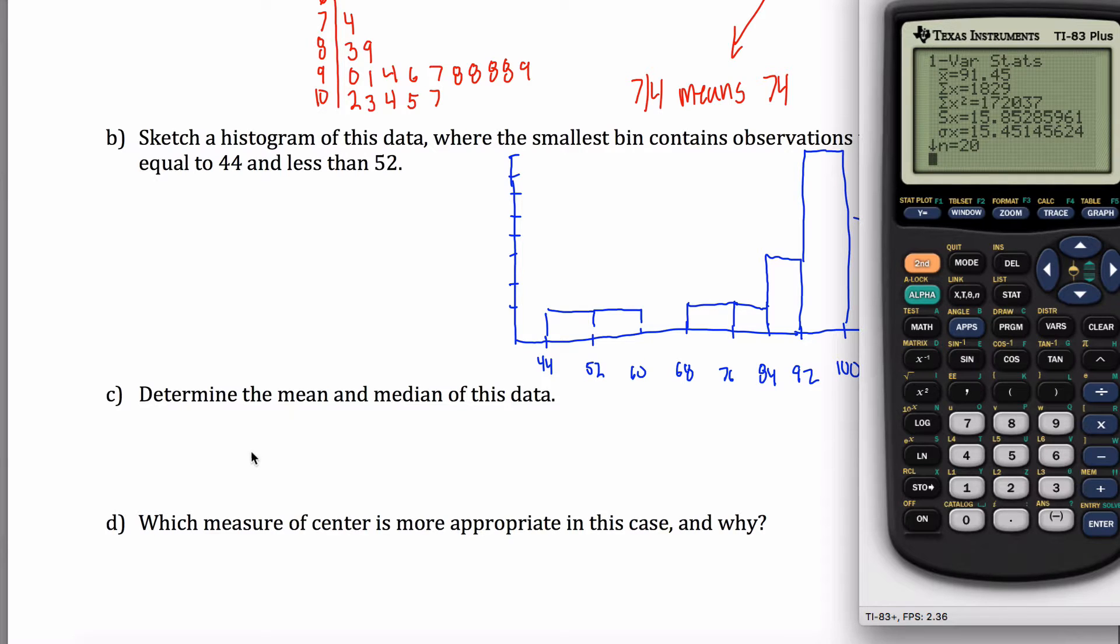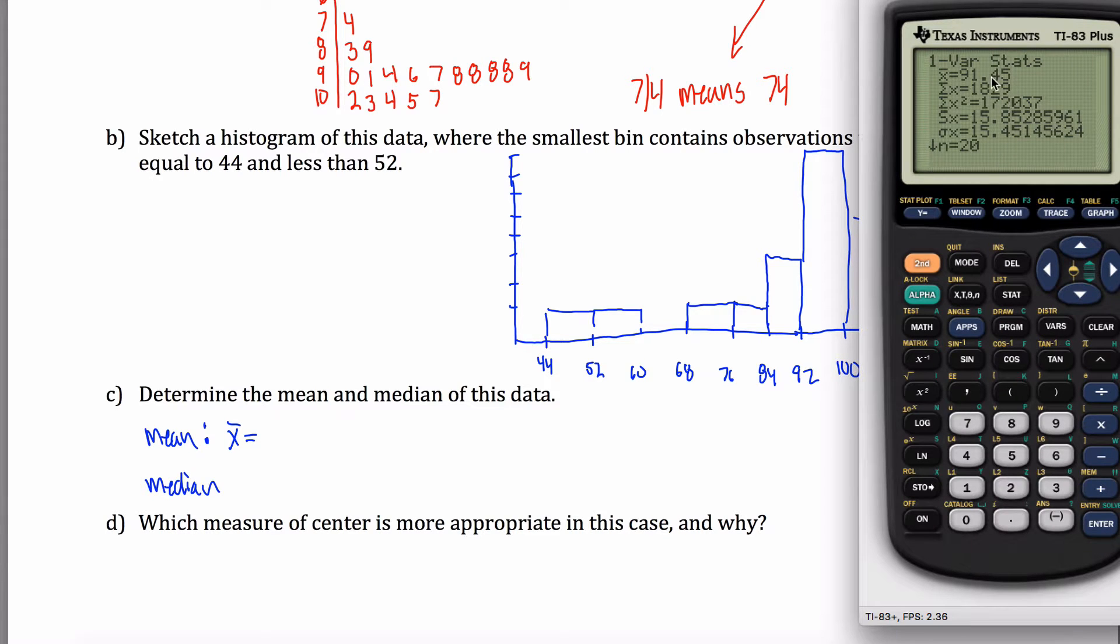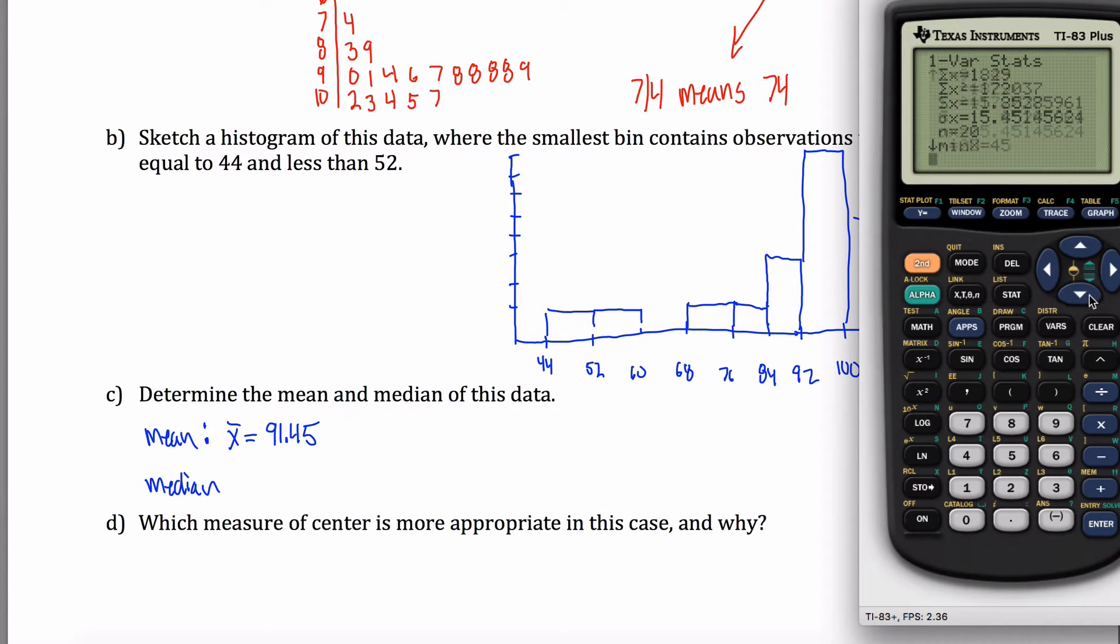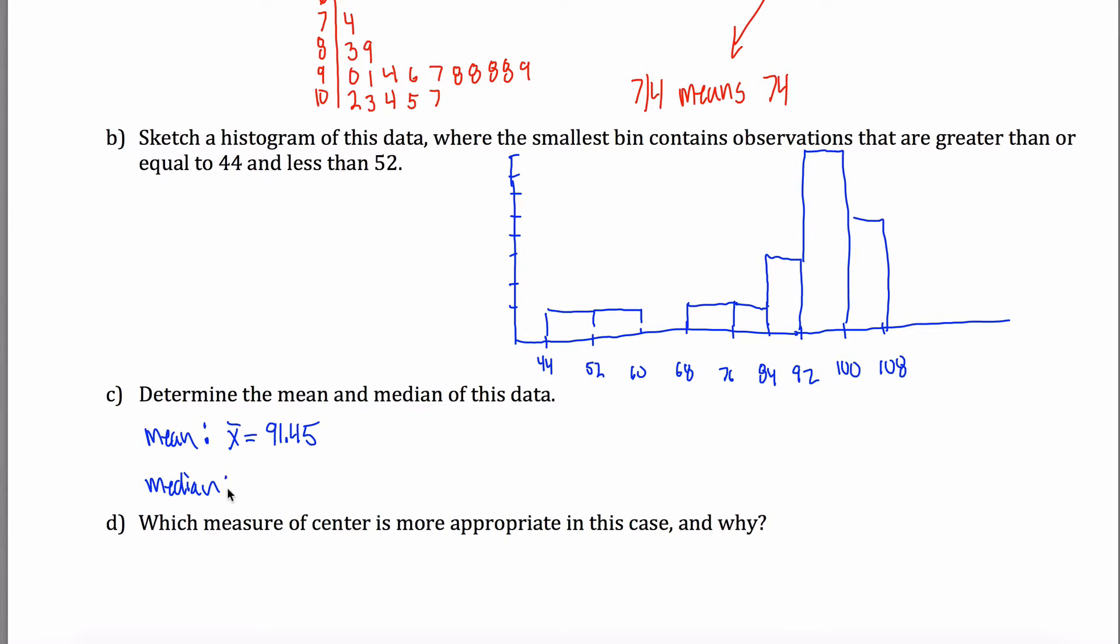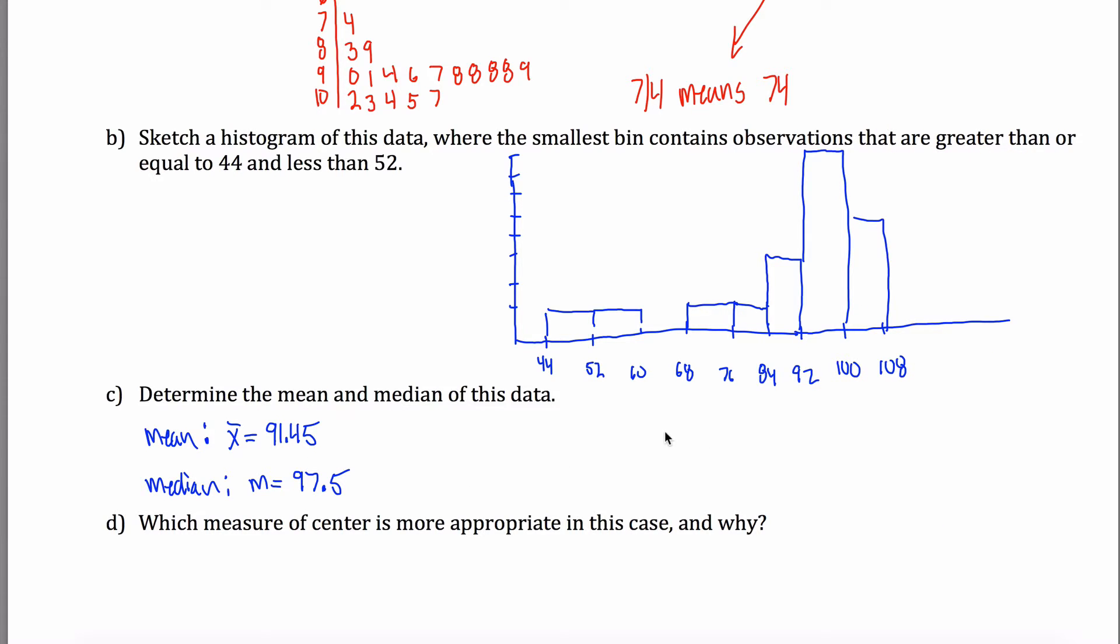Hit enter. It's going to give me some information. X bar, which is my mean, is equal to 91.45 and my median, if I scroll down a little bit, there it is. It's 97.5. Determine the mean and the median of this data, there, done.